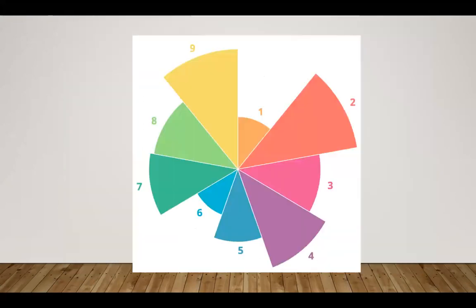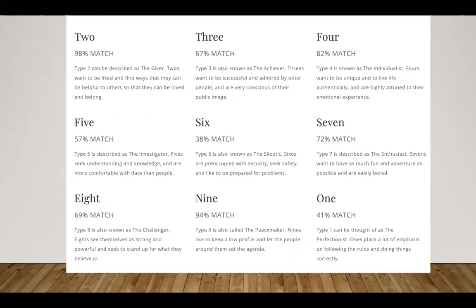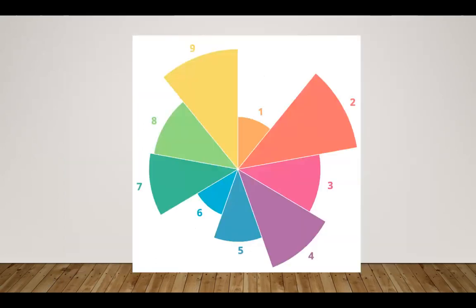Looking at my one and my three, my three is bigger than my one, so I'm considered a two wing three. Three is known as the achiever - threes want to be successful and admired and are very conscious of their public image. So taking two and three together, I'm a helper who finds identity in helping other people and wants to be respected and appreciated. In translation, I'm willing to sacrifice the success of a project just to maintain the relationship.